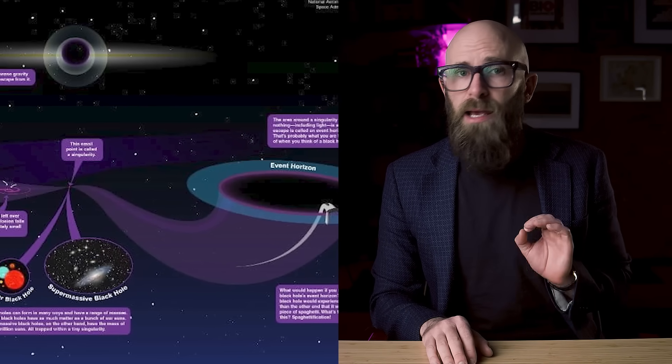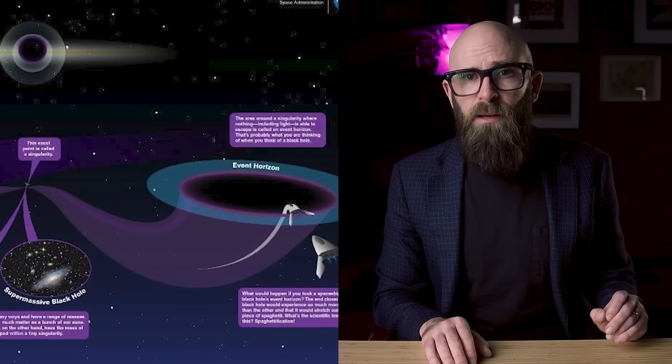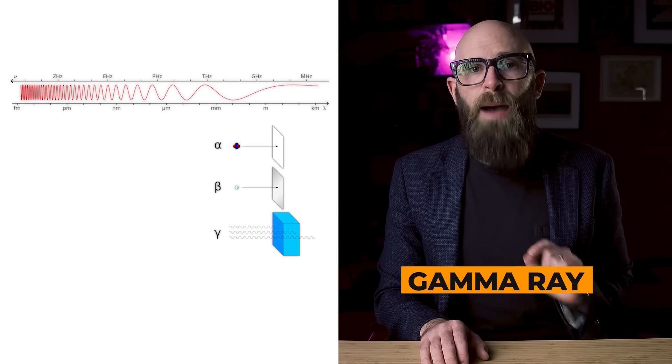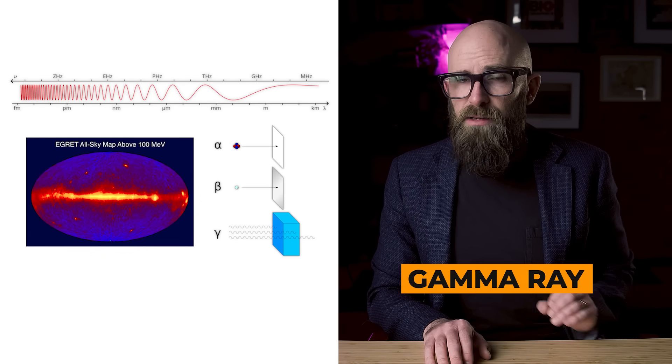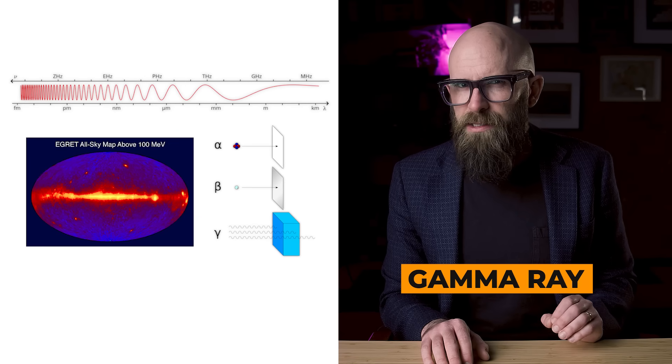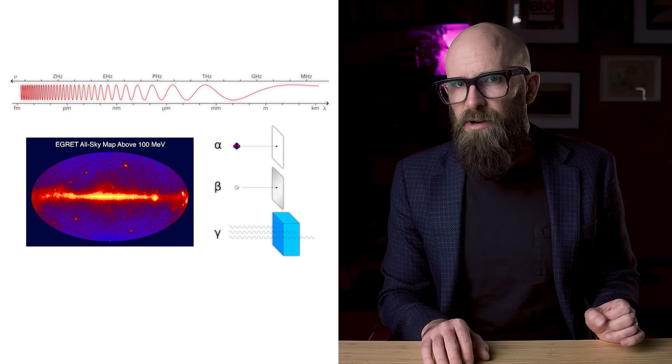The second knock-on effect from the hypothetical existence of plank stars follows on from the first: that we might actually be able to perceive their existence using the tools we have on Earth. That would come by way of a highly specific signature - a gamma ray that physicists hypothesize would have a wavelength of around 10 to the 14th centimeters.